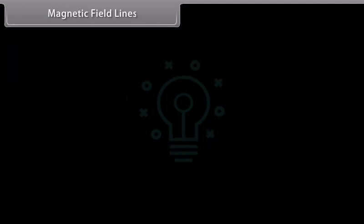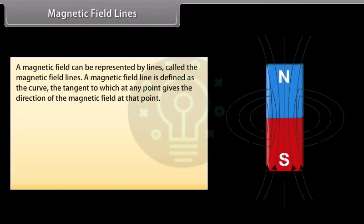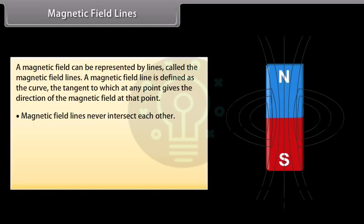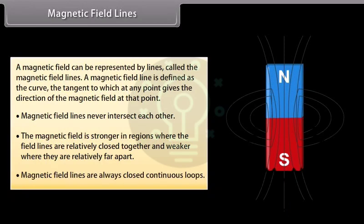Magnetic field lines: A magnetic field can be represented by lines called the magnetic field lines. A magnetic field line is defined as the curve the tangent to which at any point gives the direction of the magnetic field at that point. Magnetic field lines never intersect each other. The magnetic field is stronger in regions where the field lines are relatively close together and weaker where they are relatively far apart. Magnetic field lines are always closed continuous loops.